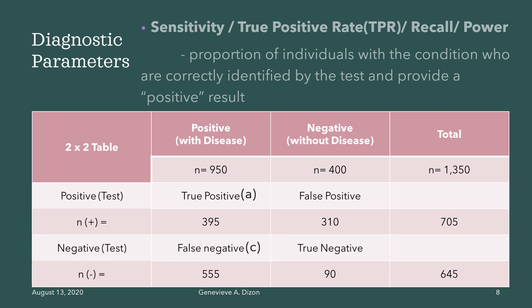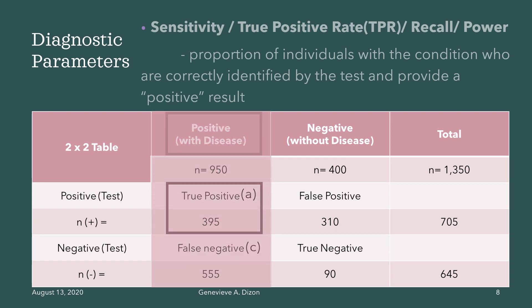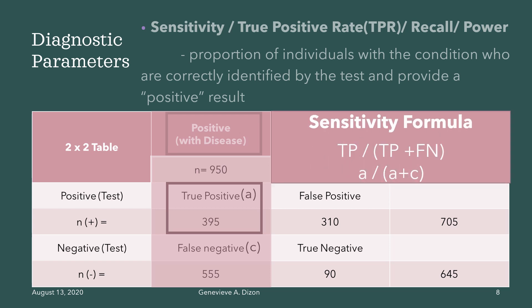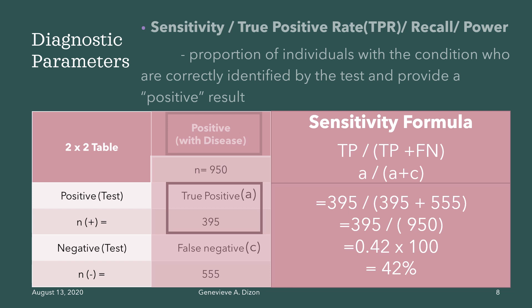Sensitivity, also known as true positive rate, recall, or power, refers to the proportion of individuals with the condition who are correctly identified by the test and given a positive result. The sensitivity formula is true positive divided by true positive plus false negative, or A divided by A plus C. Substituting the values: 395 divided by 395 plus 555, which is 950, giving 0.42. Multiply by 100 to get 42% sensitivity. This test kit would only give a 42% sensitivity to identify individuals with the condition who will be correctly identified by the test as positive.